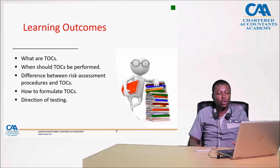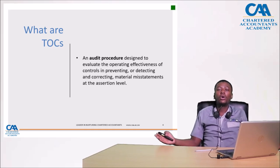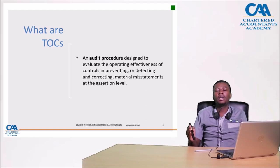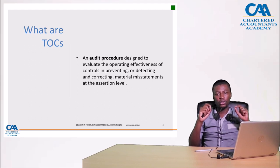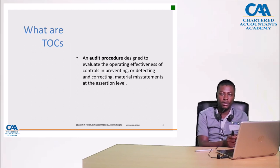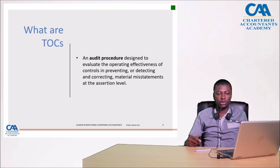So what are tests of controls? A test of control is an audit procedure. Many audit procedures are used to gather audit evidence, but specifically a test of control is designed to evaluate the operating effectiveness of controls in either preventing or detecting material misstatements. It is a tool used to gather audit evidence to test the operating effectiveness of an identified control.